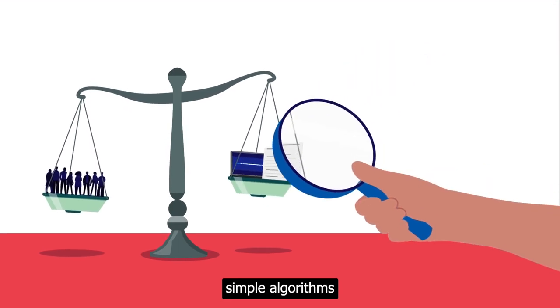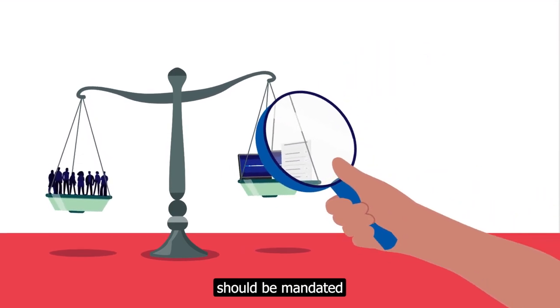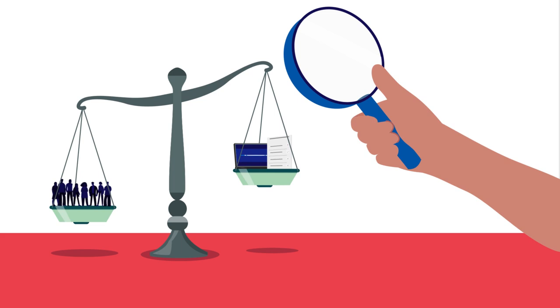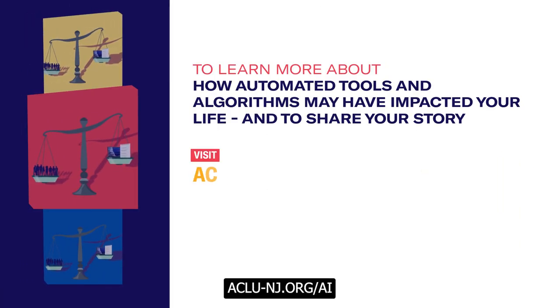Even seemingly simple algorithms come with consequences the government should be mandated to address. To learn more, visit aclu-nj.org.ai